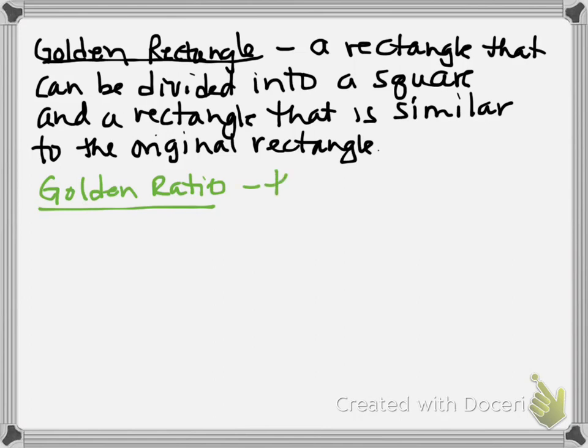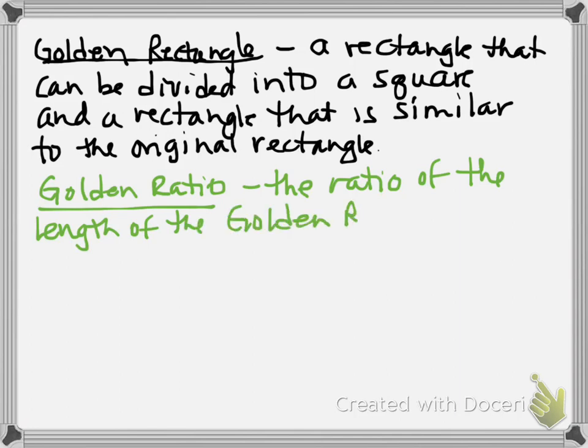It is the ratio of the length of the golden rectangle to its width. What we're going to do is come up with this idea, and you may be asked to do this derivation to come up with the golden ratio, but you should be familiar with what the golden ratio's value is.